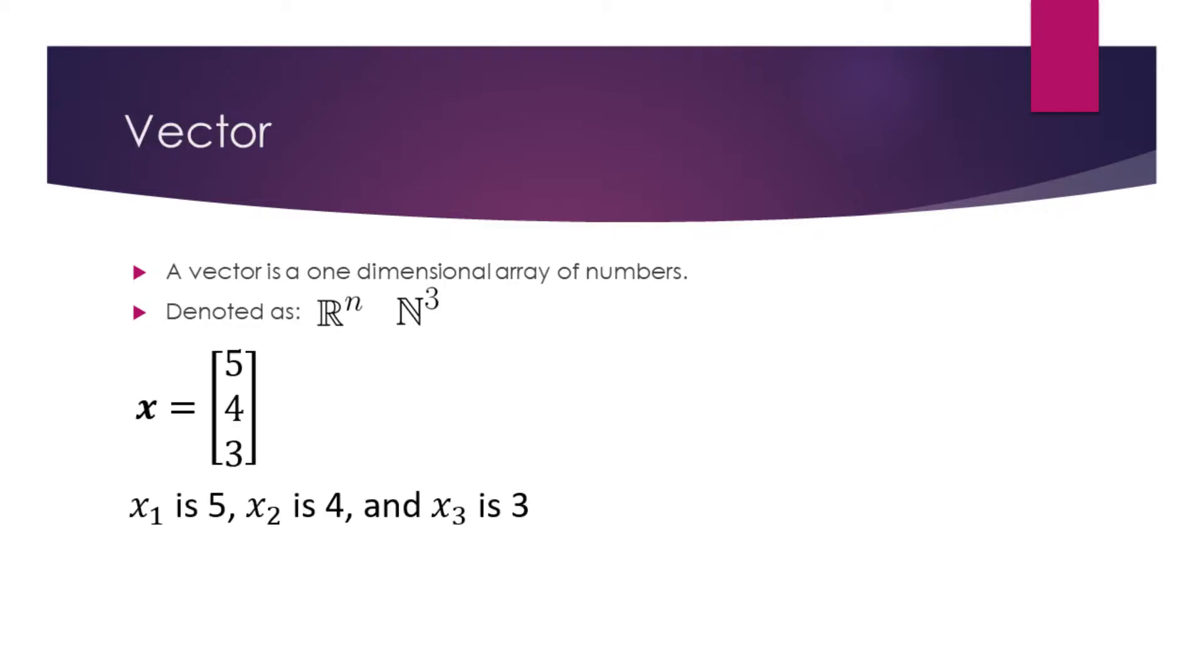A vector is a one-dimensional array of numbers. In case we have a vector composed of n real numbers, we would denote it as r superscript n as shown on the slide. Similarly, if we had a vector composed of three natural numbers, we would denote it as n superscript 3 as on the slide.